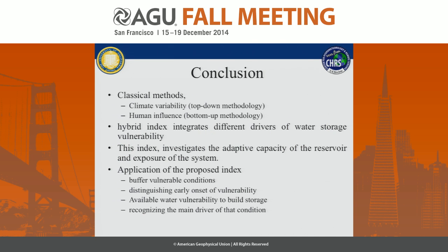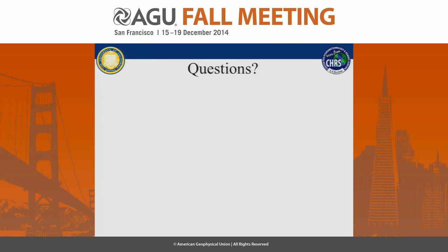As a conclusion for this work, the classical methods cover climate variability and human influence through top-down and bottom-up methodologies respectively. Here, we introduce a hybrid index which integrates the different drivers of water storage vulnerability. With this index, we can investigate the adaptive capacity of the reservoir. By application of this proposed index, we can buffer the vulnerable condition, distinguish the early onset of vulnerability, and recognize the main driver of the scarcity condition. Thank you.